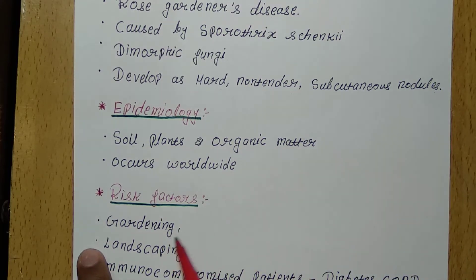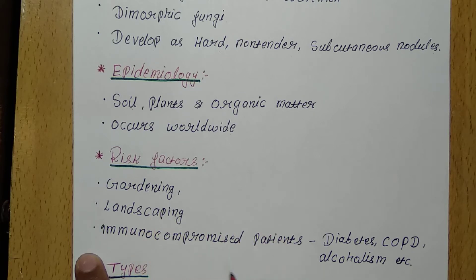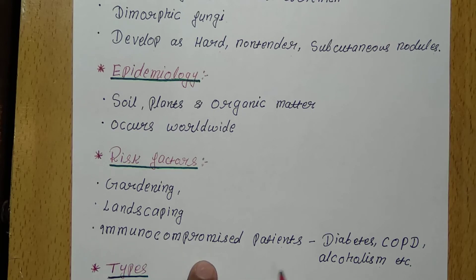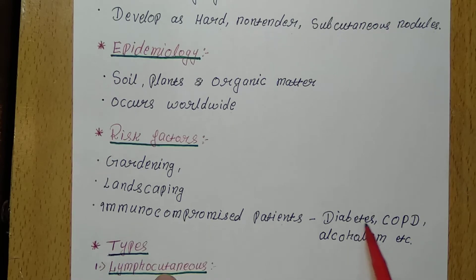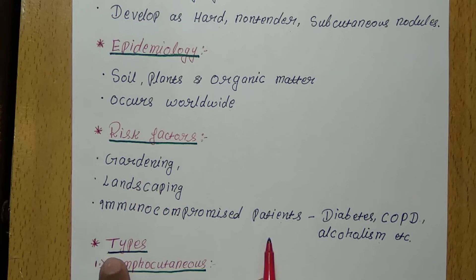What are the risk factors of Sporotrichosis? Gardening, landscaping, and being an immunocompromised patient are the three main risk factors. Immunocompromised patients include those with diabetes, chronic obstructive pulmonary disease (COPD), and alcoholism. These patients are most commonly at risk for Sporotrichosis.